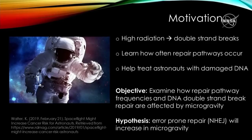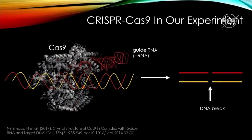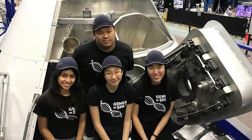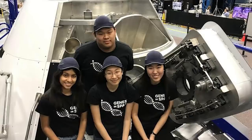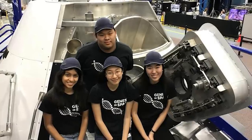Our objective was to examine how repair pathway frequencies and double-stranded break repair as a whole are affected by microgravity. To test our hypothesis, we're going to use the CRISPR-Cas9 system. We want to verify that Cas9 can cut in space and that we can deduce repair pathway frequencies based on the resulting sequences. The results of these experiments could help set the stage for genomic editing in space and protect astronauts from intense radiation experienced in flight.